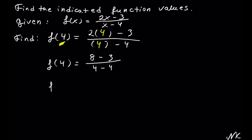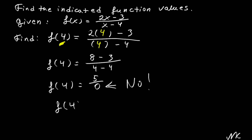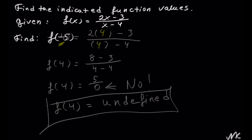So we get f of 4 is equal to 8 minus 3, which is 5, out of 4 minus 4, which is 0. We cannot divide by 0, so f of 4 is undefined. And this is our solution.